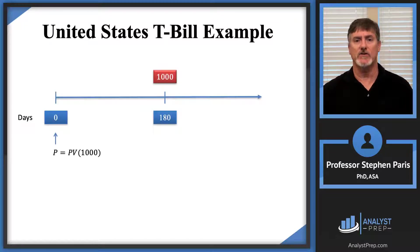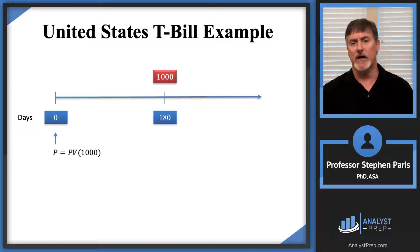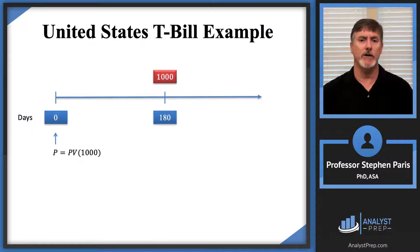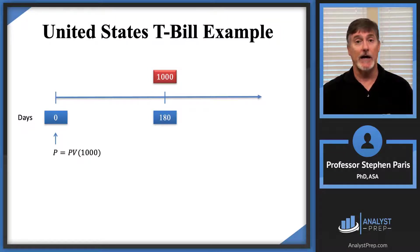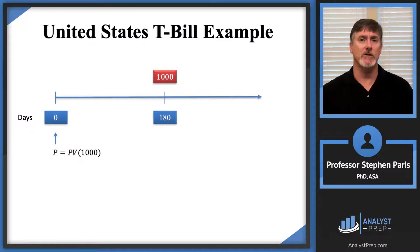Let's look at the picture again. This is the same picture as before with the Canadian T-Bill. The redemption value is after 180 days, so the T-Bill matures after 180 days, and the price of the T-Bill is the present value of the redemption value — the present value of that 1,000. We need more information in order to calculate a numeric value for that present value.